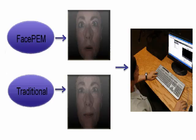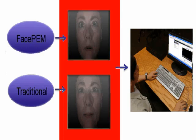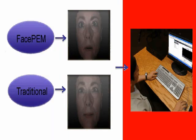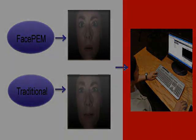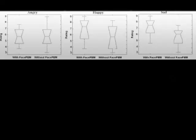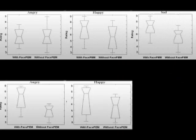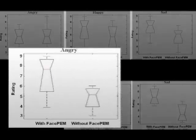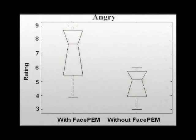We generated facial animation clips from both the traditional algorithm and the algorithm with FACEPAN metrics, and conducted a comparative user study experiment to evaluate the motion fidelity and expressiveness. A one-way ANOVA analysis was performed on the collected experiment results. As shown in these figures, facial animation clips generated by FACEPAN-guided algorithms achieved significantly higher average ratings.